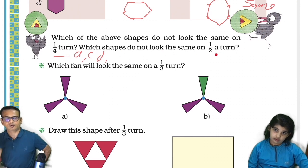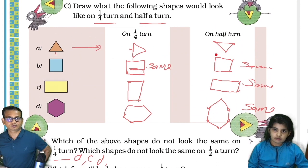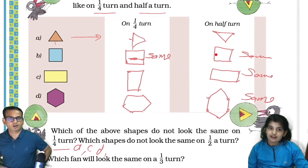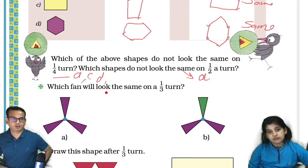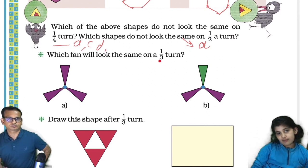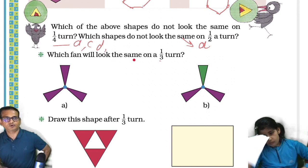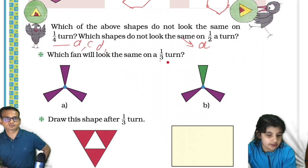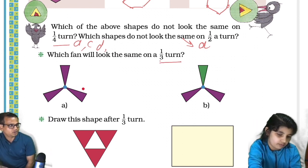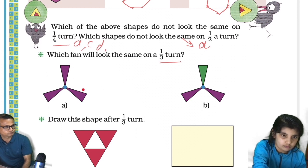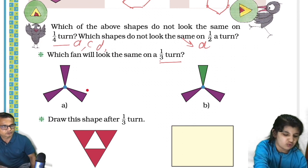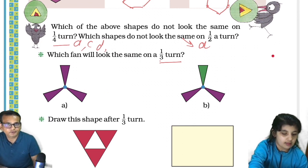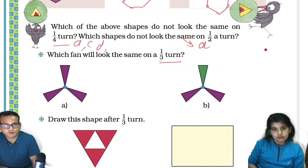Which shapes do not look the same on a one-third turn? Which fan will look the same on a one-third turn? One-third means between this one — between quarter and... see, one-third means what? One-third is...